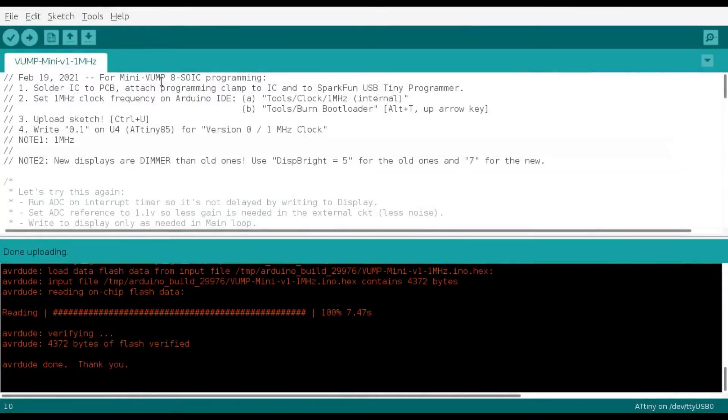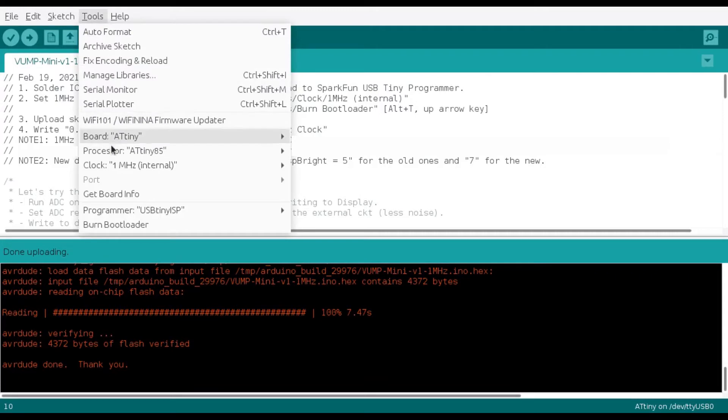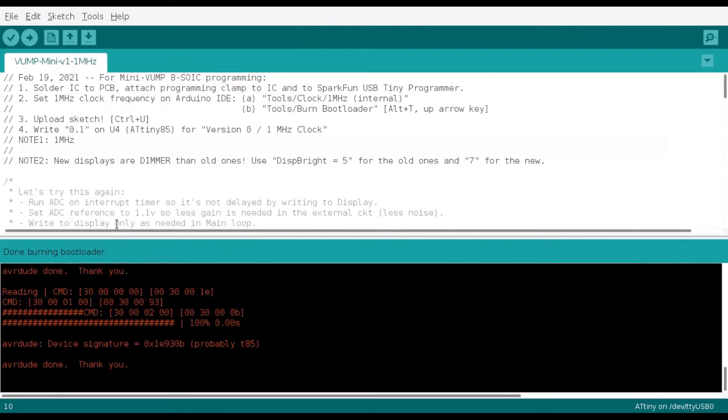With the chip inserted, I'm ready to install my program. In my case, I'm using a 1MHz internal clock. So first thing I do is burn the bootloader. Boom, done.